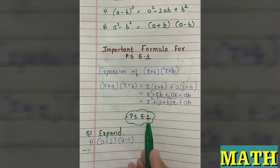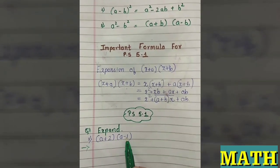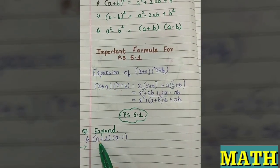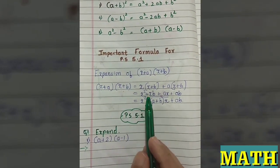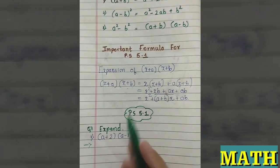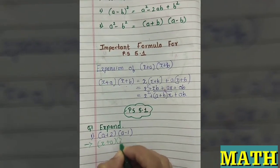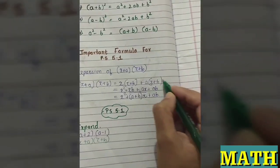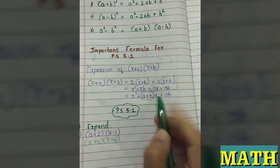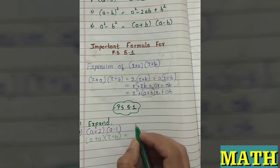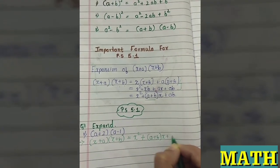We will start with Practice Set 5.1, question number 1: expand (a+2)(a-1). This is in the form (x+a)(x+b), so we will be using this expansion formula. The formula is: (x+a)(x+b) = x² + (a+b)x + ab. Let us write it down so it will be easier to remember.